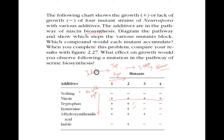Most likely this pathway will be: indole → tryptophan → 3-hydroxyanthranilic acid, or indole → kynurenine → 3-hydroxyanthranilic acid. Now, which mutant belongs to which step? The mutant with the least number of pluses — mutant number 4 — has only 1 plus (niacin).